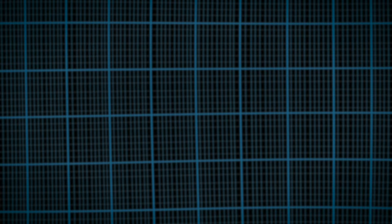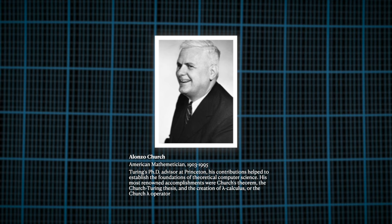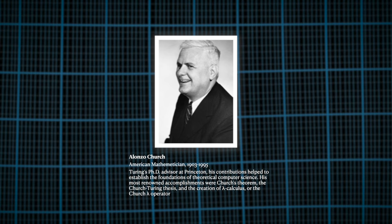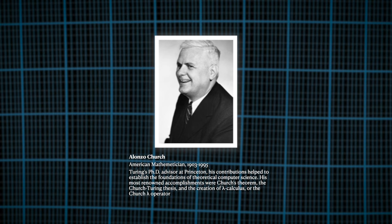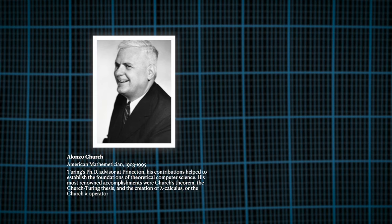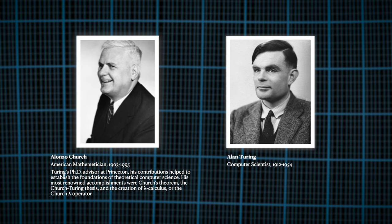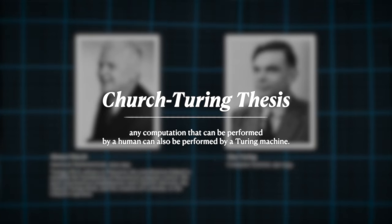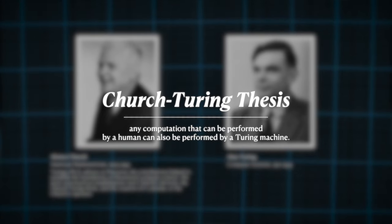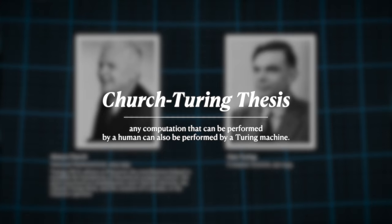Turing's ideas were further developed by other logicians and mathematicians, such as Alonzo Church, who independently proposed a similar concept of a universal machine in the same year Turing did, and was actually Turing's PhD advisor at Princeton. These ideas eventually led to the development of the Church-Turing Thesis, which states that any computation that can be performed by a human can also be performed by a Turing machine.